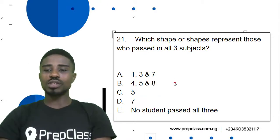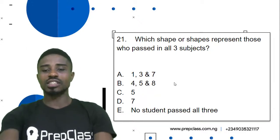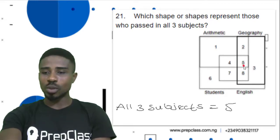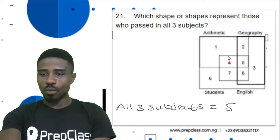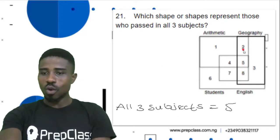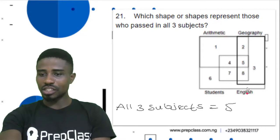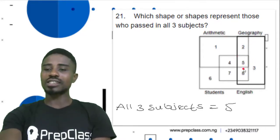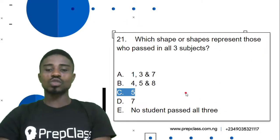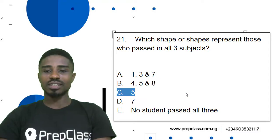Question 21: Which shape or shapes represents those who passed in all three subjects? We need to find a number covered by all three subjects. Region 4 is only arithmetic and English. Region 7 is only English. Region 8 is English and geography. But region 5 is for arithmetic, English and geography — all three subjects. So our correct answer is 5. Question 21, option C — 5 is our correct answer.